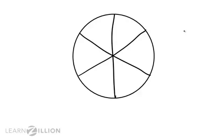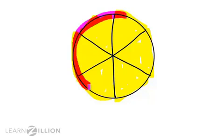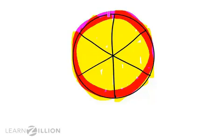Just like I can count pennies or shoes — one penny, two pennies, one shoe, two shoes — I can count sixths: one sixth, two thirds, three sixths, four sixths, five sixths, six sixths. When I counted all of the pieces in this whole circle and put them all together, I got the whole that I started with.